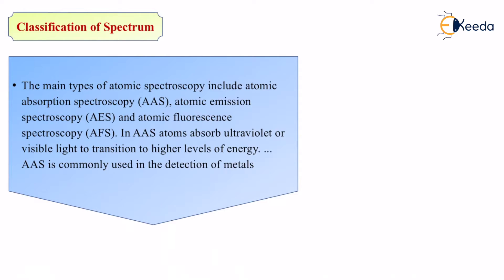So the three types are: AAS (atomic absorption spectroscopy), AES (atomic emission spectroscopy), and AFS (atomic fluorescence spectroscopy). In AAS, atoms absorb ultraviolet or visible light to transition to higher levels of energy.